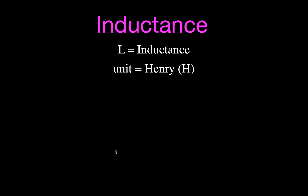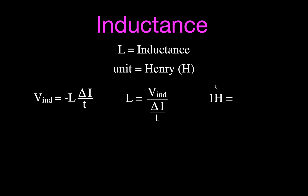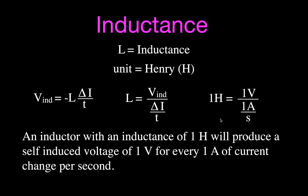Now let's talk about what a Henry is. Starting from the self-induced voltage equation and solving for L, we get: L equals induced voltage divided by the rate of change of the current. Substituting units, one Henry means an inductor will produce one volt of self-induced voltage when the current changes at one amp per second. So an inductor with an inductance of one Henry will produce a self-induced voltage of one volt for every one amp of current change per second.